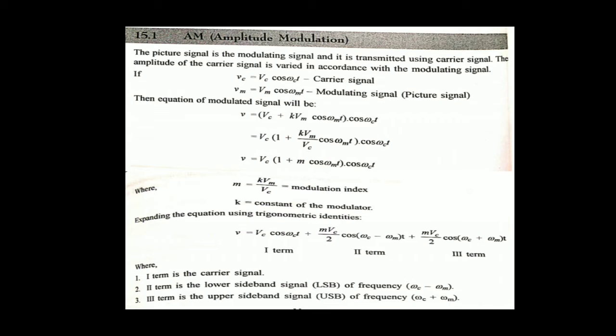So first we discuss AM modulation. In AM modulation, basically the picture signal is the modulated signal and it is transmitted in the carrier signal. The amplitude of the carrier signal varies in accordance with the modulation signal. Vc equals Vc cos(omega-c · t) is the carrier signal. Vm is the modulated signal or picture signal. The modulation index m equals K·Vm divided by Vc, where K is the constant of the modulator.